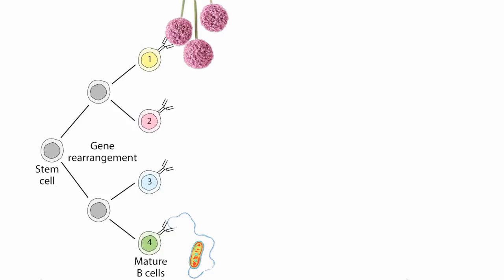Wait a second. There must be like a billion different things in the world. If each of our B-cells produces only one type of antibody, then we'd have to have like a billion different types of B-cells. And we do, which is totally amazing.